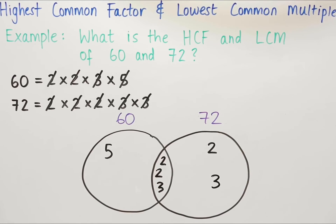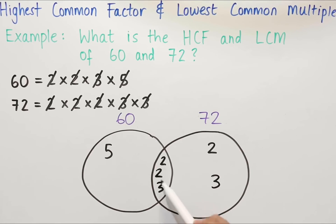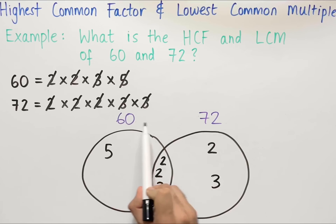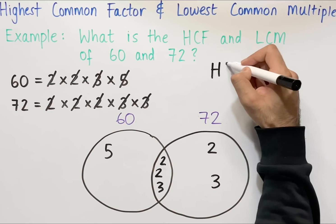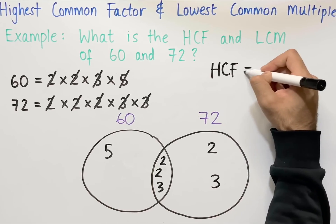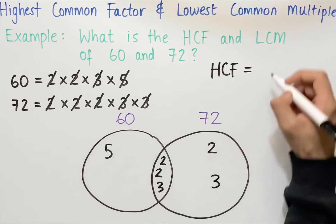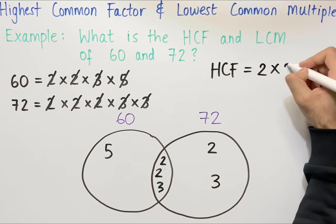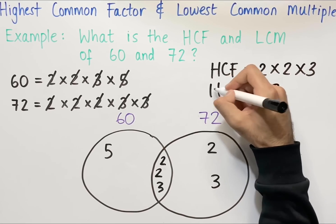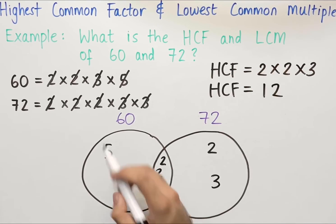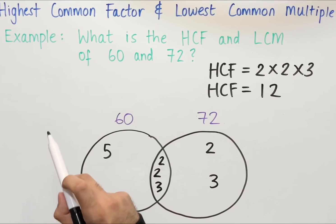To work out the highest common factor, we multiply all the numbers in the middle region — these are the numbers common to the prime factorisations of both 60 and 72. So the HCF equals 2 times 2 times 3, which is equal to 12. The highest common factor of 60 and 72 is 12.